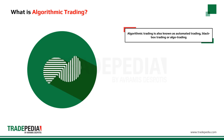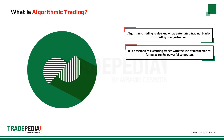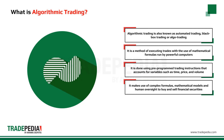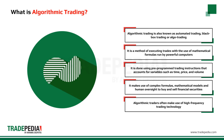Algorithmic trading, also known as automated trading, black box trading, or algo trading, is a method of executing trades with the use of mathematical formulas run by powerful computers. It is done using pre-programmed trading instructions that account for variables such as time, price, and volume. Algorithmic trading makes use of complex formulas combined with mathematical models and human oversight to buy and sell financial securities. Algorithmic traders often make use of high-frequency trading technology, which can enable them to make thousands of trades in a very short time.